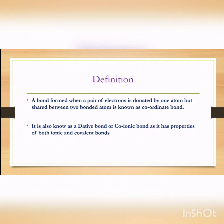Why is it called co-ionic bond? It is called co-ionic bond because it shows properties both of ionic bonds as well as covalent bonds. So it has something that ionic bond has, and it also has some properties like covalent bonds.